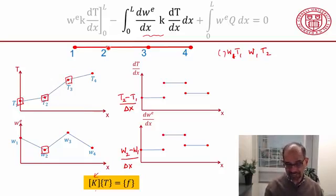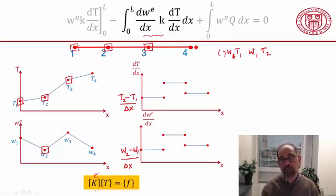Which means that when I write the algebraic equation and collect terms, the algebraic equation at this node will involve the temperature value here, and the temperature value here, and the temperature value here. It won't involve the temperature value here.